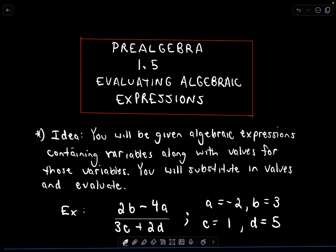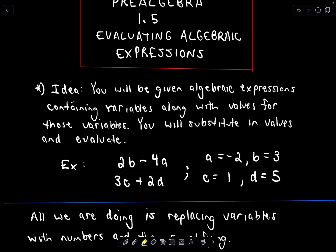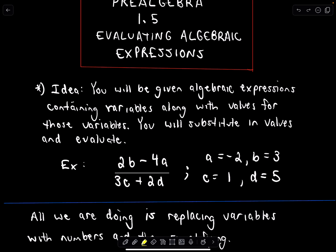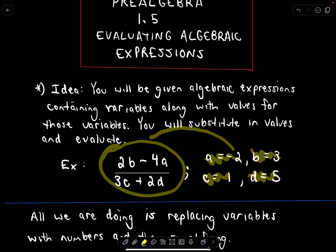This is section 1.5 of my pre-algebra series: Evaluating Algebraic Expressions. The basic idea is pretty straightforward. You'll be given algebraic expressions — here's an example with four variables. What we're going to do is assign values to each of those variables, substitute them into the appropriate places, replace all of the variables with their values, and then simplify down. Nothing too crazy here.